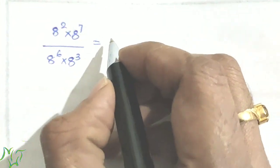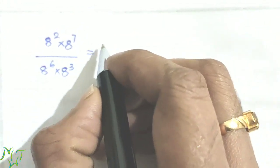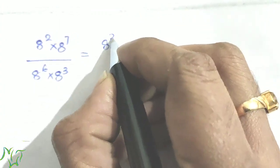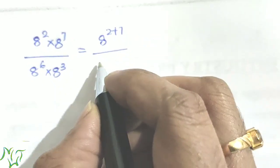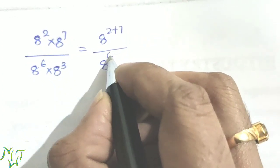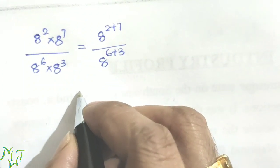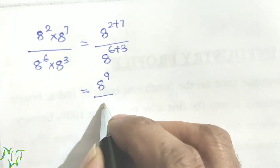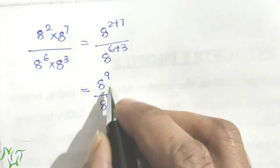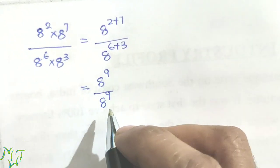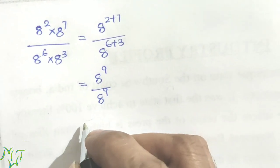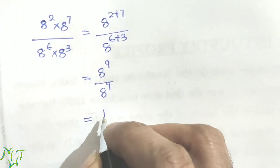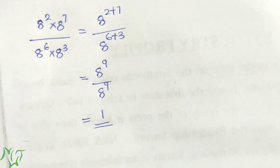Next question: 8 squared into 8 raised to 7, by 8 raised to 6 into 8 cubed. Here we use the multiplication rule in both numerator and denominator together. Numerator: 8 raised to 2 plus 7 is 8 raised to 9. Denominator: 8 raised to 6 plus 3 is again 8 raised to 9. Since the same number appears in numerator and denominator, the answer is 1.